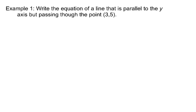Write the equation of a line that is parallel to the y-axis. So the y-axis is vertical. If we want a line parallel to the y-axis, all we're asking for is a vertical line that passes through the point (3,5). Now, because it's a vertical line, the equation has to look like x equals something. It has to be x only.